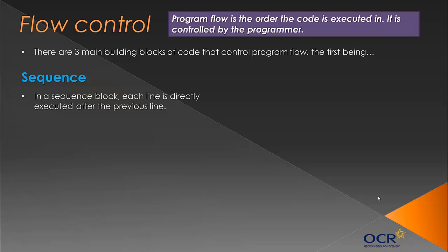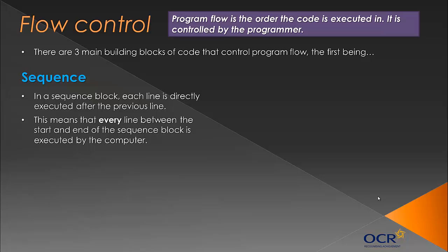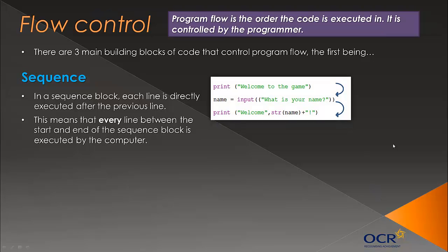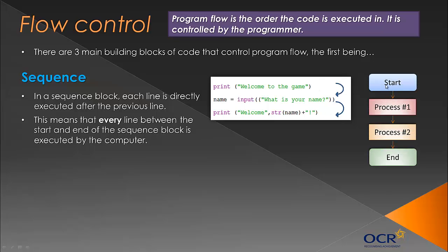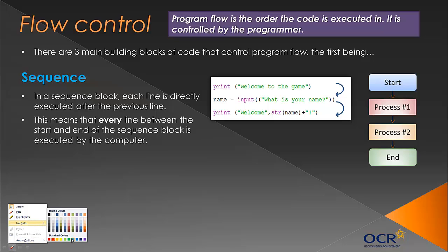In a sequence block, each line is directly executed after the previous line — it really works in sequence. Once one line finishes being executed, the next one gets executed, and so on. Every line between the start and the end gets executed. We can represent it by a flowchart, where it passes through each process block line by line, and we could also represent it in pseudocode.